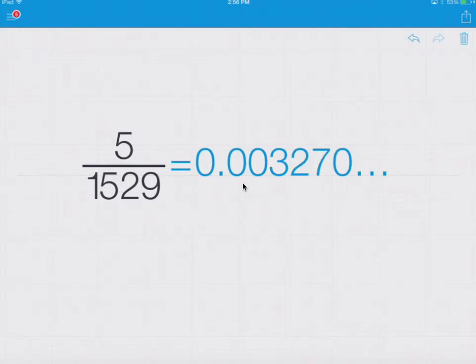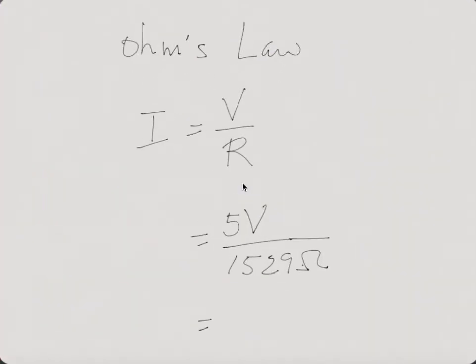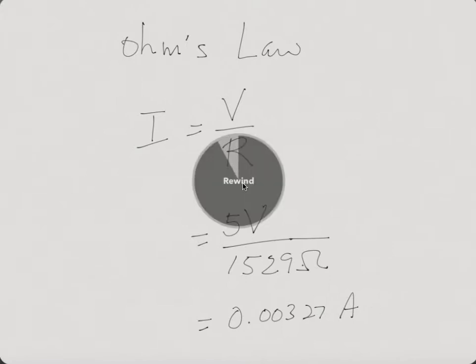0.00327 amps. So we could write that like this, 0.00327 amps, or it could be written as milliamps. We won't worry about the milliamps right now.